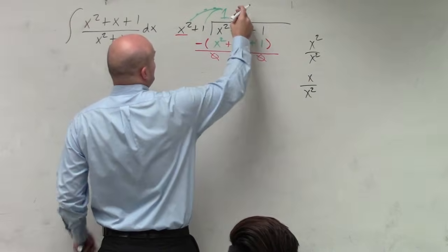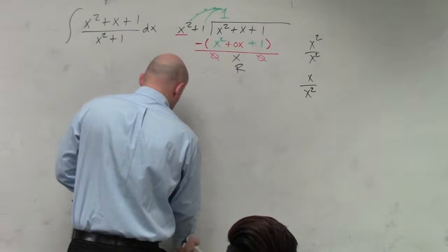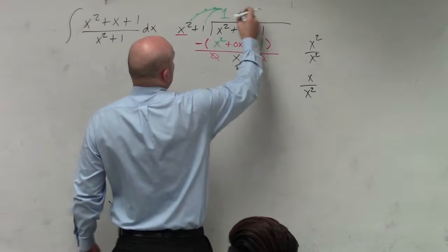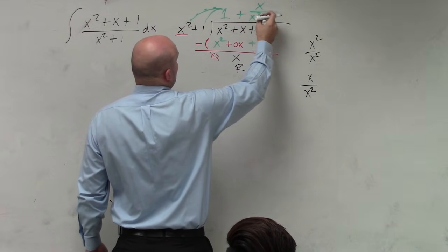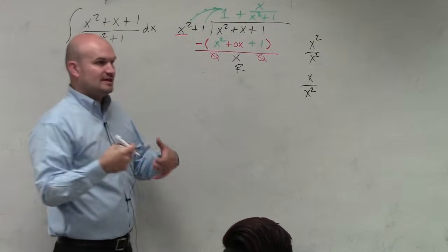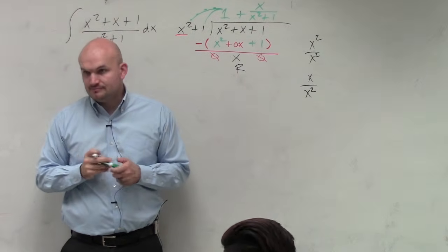So therefore, we're going to say plus x over the divisor, x squared plus 1. So you always take your remainder over your divisor.